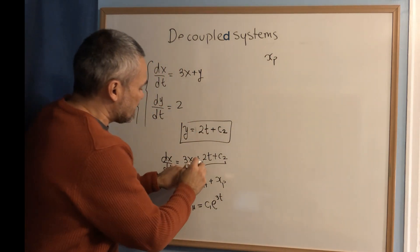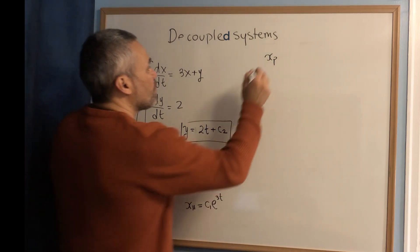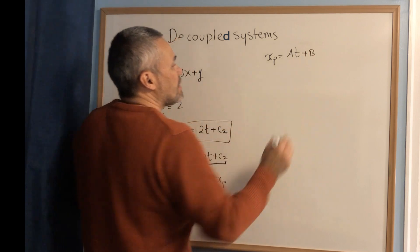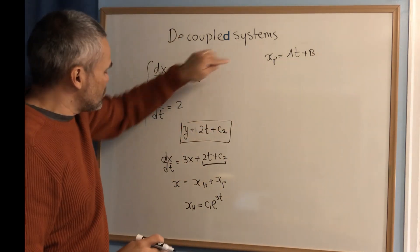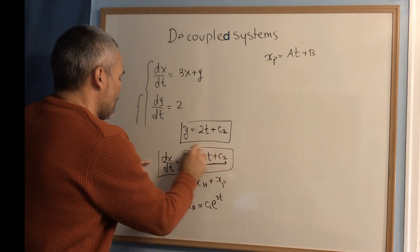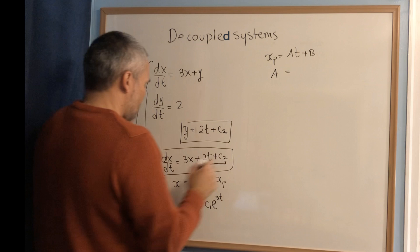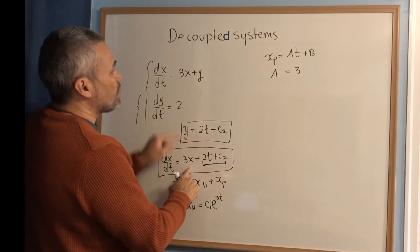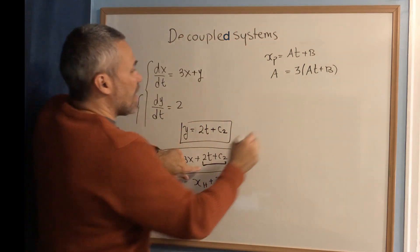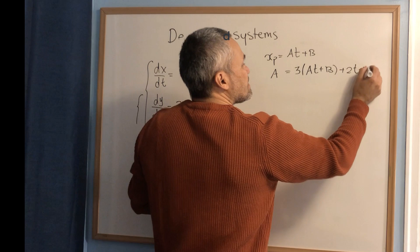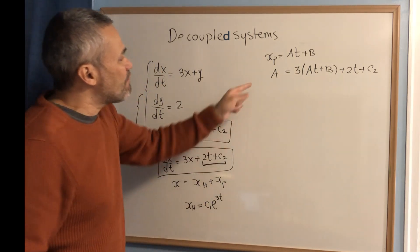To find the particular solution, we look at the non-homogeneous part: 2t plus c2. This is a polynomial of order one, so we guess a particular solution of the form at plus b. We want to find a and b such that this function satisfies the equation. Taking the derivative gives us a, and we want this to equal 3 times (at plus b) plus 2t plus c2.